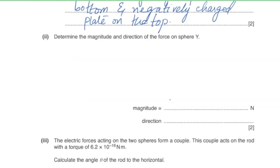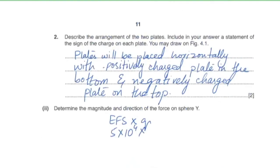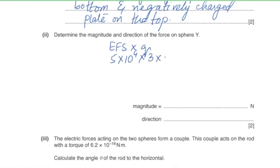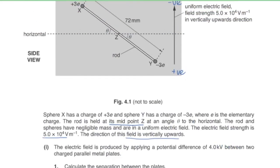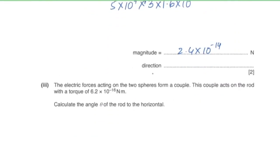Part two: determine the magnitude and direction of the force on sphere Y. Force = E × q = 5 × 10⁴ × 3 × 1.6 × 10⁻¹⁹ = 2.4 × 10⁻¹⁴ newtons. Since sphere Y is negatively charged, it is attracted toward the positively charged plate below, so the electric force acts vertically downwards.